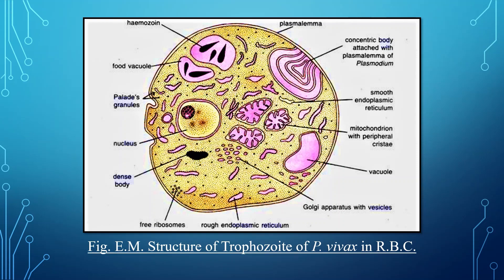The cytoplasm contains a large nucleus, and it is uninucleated, having a single nucleus. The nucleus is bounded by a double membrane on which RNA particles are present. At the center of the nucleus, a nucleolus is present.